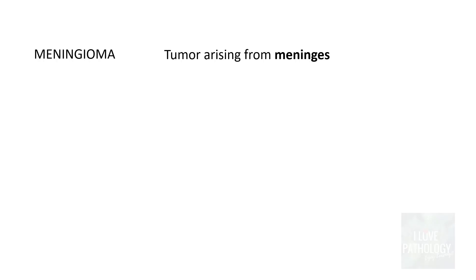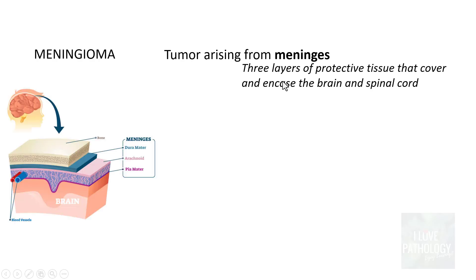Meningioma is basically a tumour arising from the meninges. The meninges are the three layers which protect and encase the brain and spinal cord. The three layers are: one, the dura mater; two, beneath the dura mater is the arachnoid mater; and then you have pia mater which encases the brain tissue. In between the arachnoid and the pia mater is the subarachnoid space.